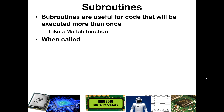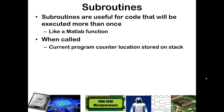So what happens when a subroutine is called? The first thing is the current program counter is stored on the stack. The program counter keeps track of what line of code is being run at any given time — that is an address in the flash program memory on your PIC. Whenever you hit a call to a subroutine, that particular address in the flash program memory is stored onto the stack.